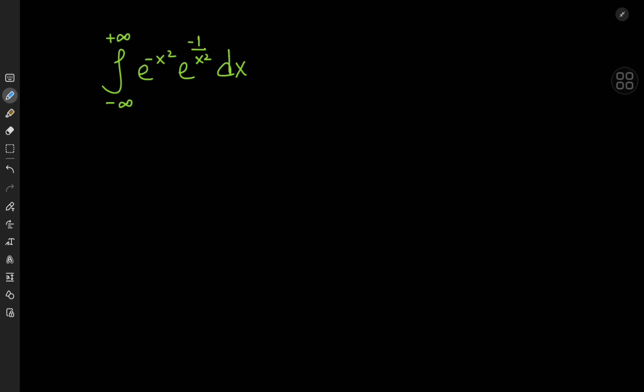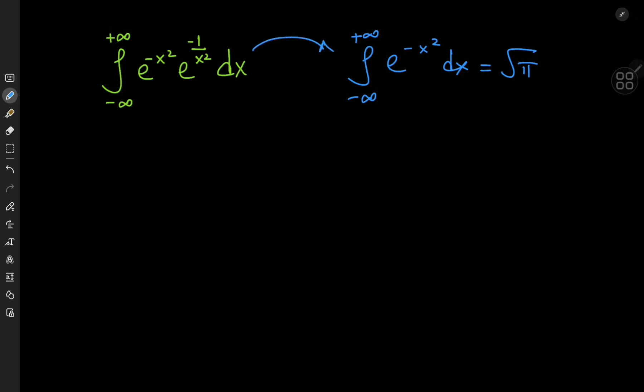Today we have this interesting Halloween costume for the Gaussian integral. It's the integral from negative to positive infinity of e to the negative x squared — that's your classic Gaussian term — times e to the negative 1 by x squared, which is a more twisted version of the Gaussian term. The resemblance between this structure and the classic Gaussian integral, the integral from negative to positive infinity of e to the negative x squared dx equals root pi, motivates us to somehow convert the structure we have into the classic Gaussian structure.